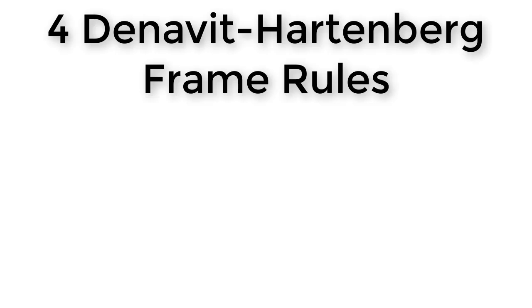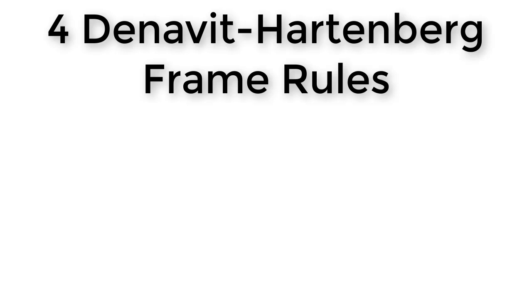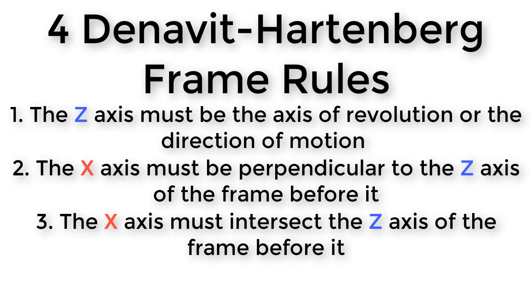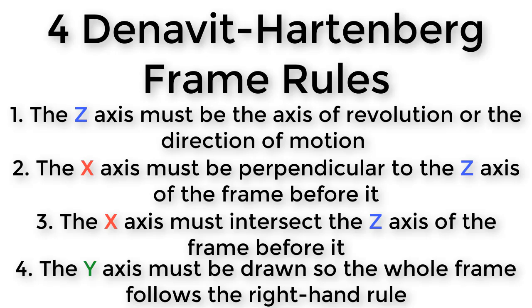When assigning frames, you need to follow four Denavit-Hartenberg rules. Rule one: the z-axis has to be the axis of revolution for a revolute joint, or the direction of motion for a prismatic joint. Rule two: the x-axis has to be perpendicular to the z-axis of the frame that comes before it. Rule three: the x-axis has to intersect the z-axis of the frame that comes before it. And rule four: the y-axis has to be drawn so that the frame follows the right-hand rule. We have one rule about the z-axis, two about the x-axis, and one about the y-axis.